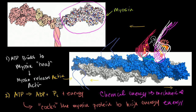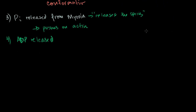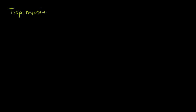To understand that, there are two other proteins that come into effect: tropomyosin and troponin. Let me redraw the actin filament — a very rough drawing with its little grooves. It's actually a helical structure.